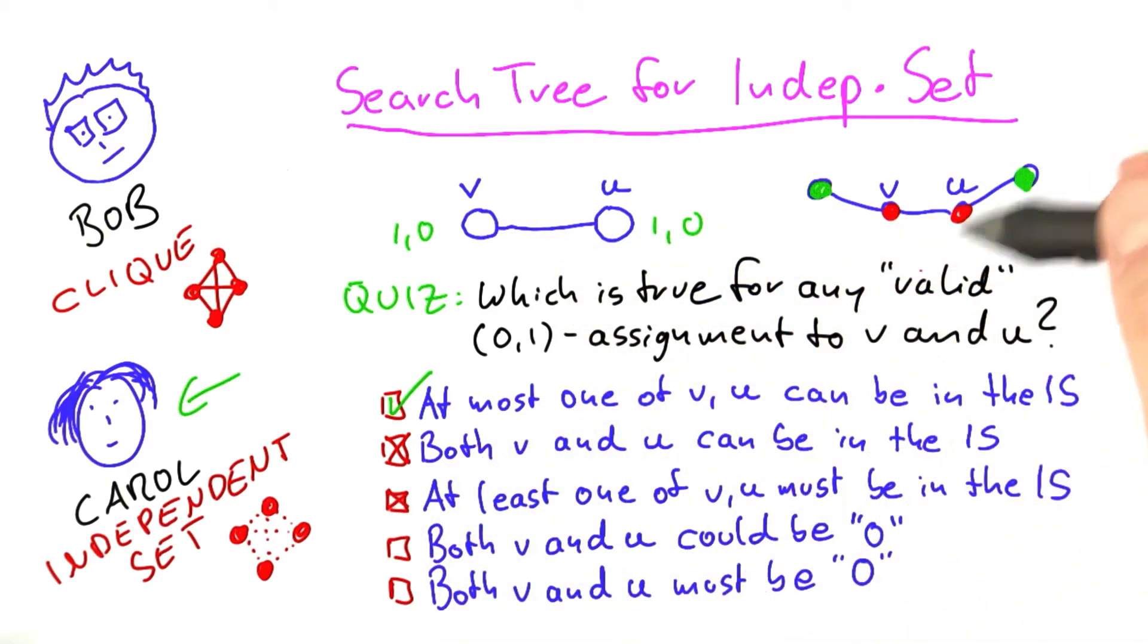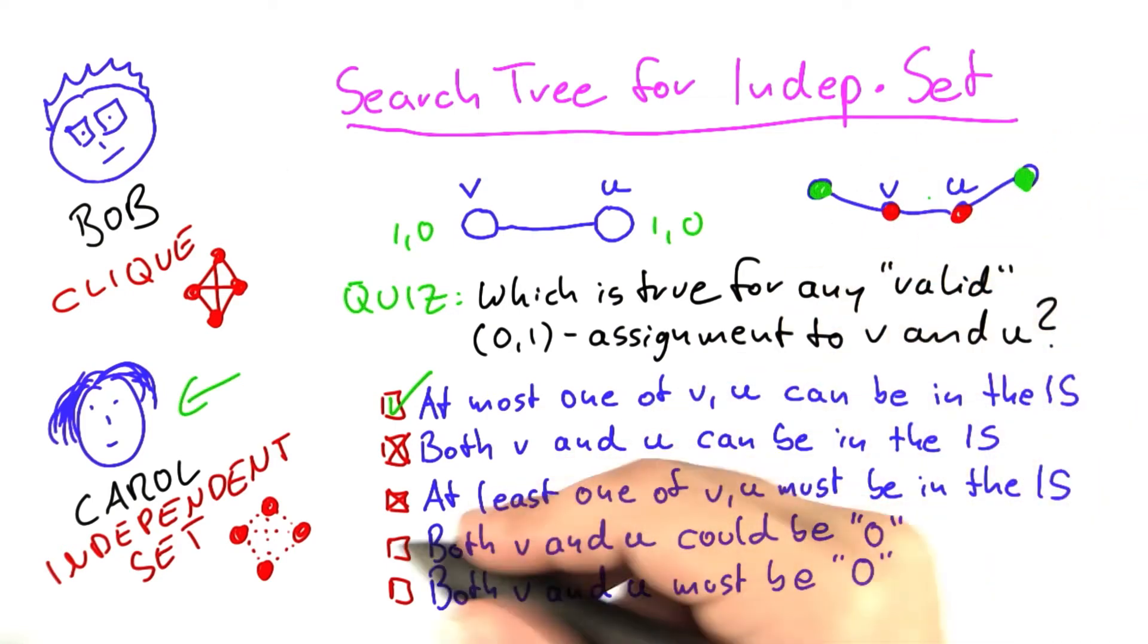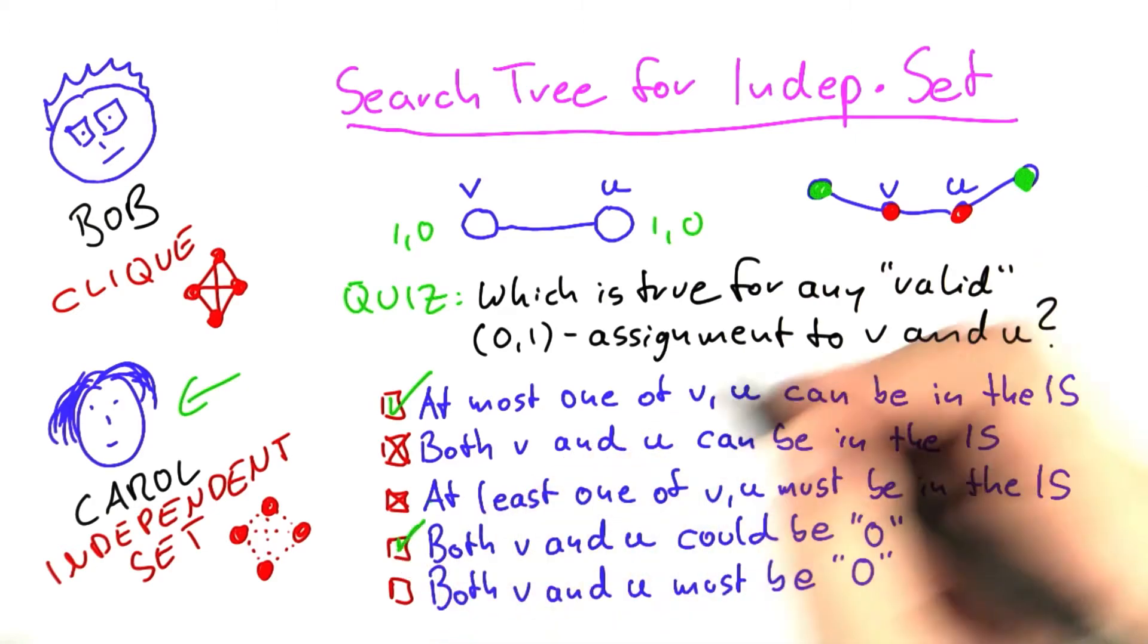Both v and u could be 0. Yes, this is exactly what is also shown by this example. You can have the case that both are not part of the independent set, so this is definitely a yes here.